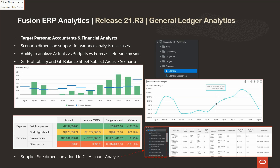With budget data in GL profitability and GL balance sheet, customers can do actual versus budget analysis. Here are some sample analyses: you can see an actual versus budget trend by period, you can look at your actual versus budget data in a tabular or graphical format, and you can see variance as a percentage of budget. In addition to this, we have added supplier site dimension to GL account analysis, with the supplier site attributes shown in this picture.